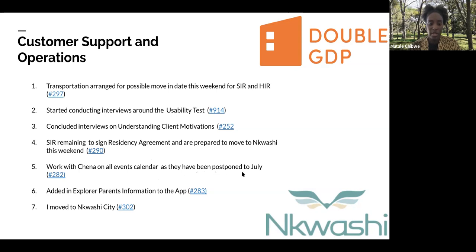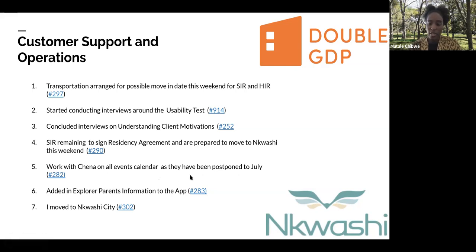Unfortunately, we had to postpone the Chenna event which was supposed to take place in June — it has been postponed to July. We'll be working on training them this week on how to add visitors to the app. We also added the explore parents information to the app. I finally also moved to Inkwashi City, and it has been an eventful experience so far. That is my CSM sprint update.